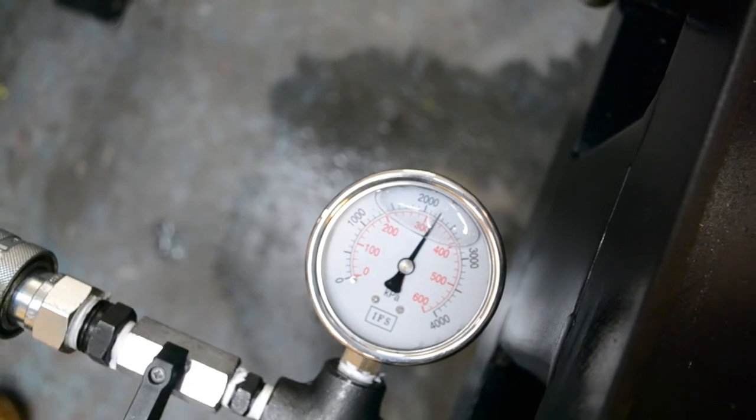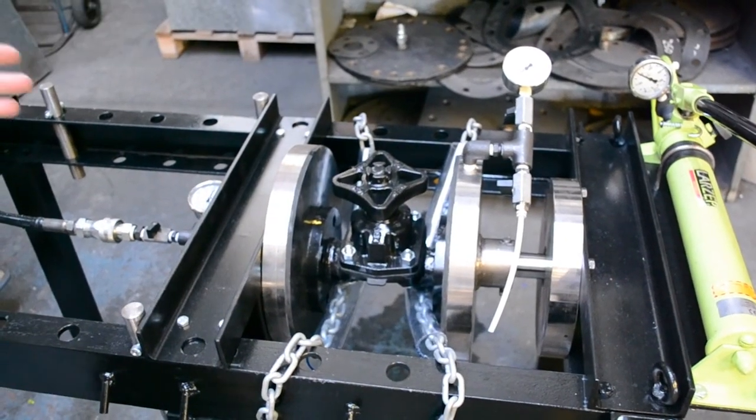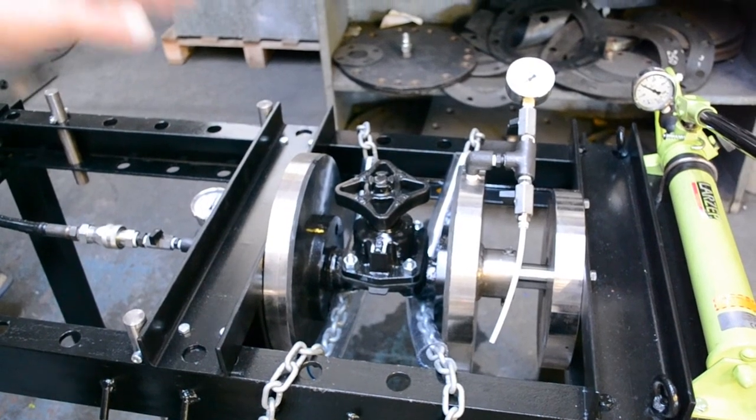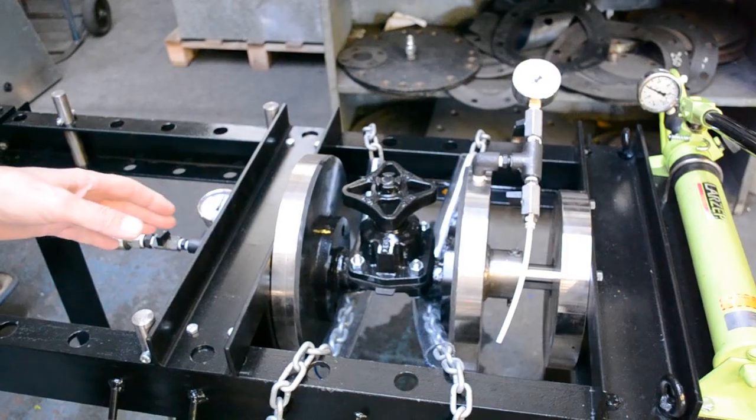Close the inlet pressure gauge valve. Visually check the valve for leaks and observe the gauge for pressure change. If no leaks are evident and the gauge remains static, the test valve has passed the shell test.